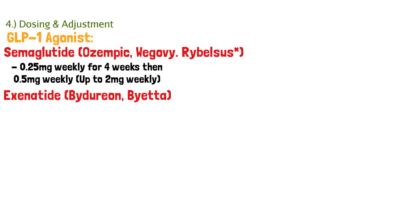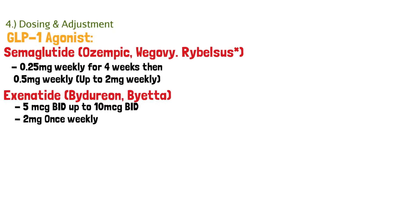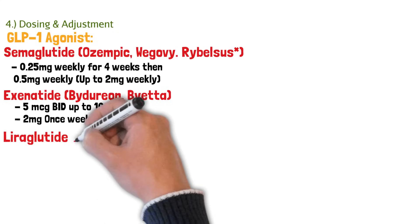Next, we have exenatide or Byduron or Byetta. Look at the difference here. It's 5 micrograms twice a day, up to 10 micrograms twice a day. Or you could use that extended version of 2 milligrams once weekly. So imagine you're injecting twice a day, and that's not really favorable when it comes to a patient's adherence.